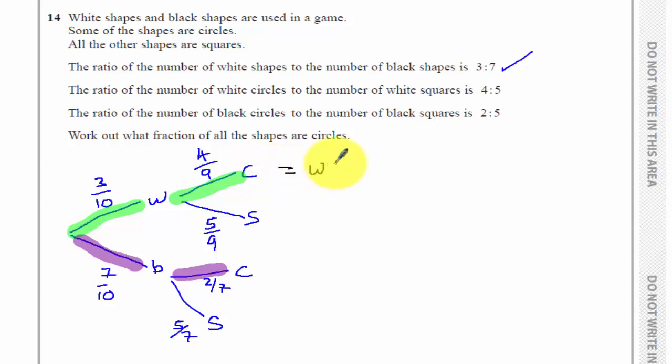So to get a white circle, that would be three tenths times four ninths, which would be 12 over 90. Getting this sum picks me up my first mark.